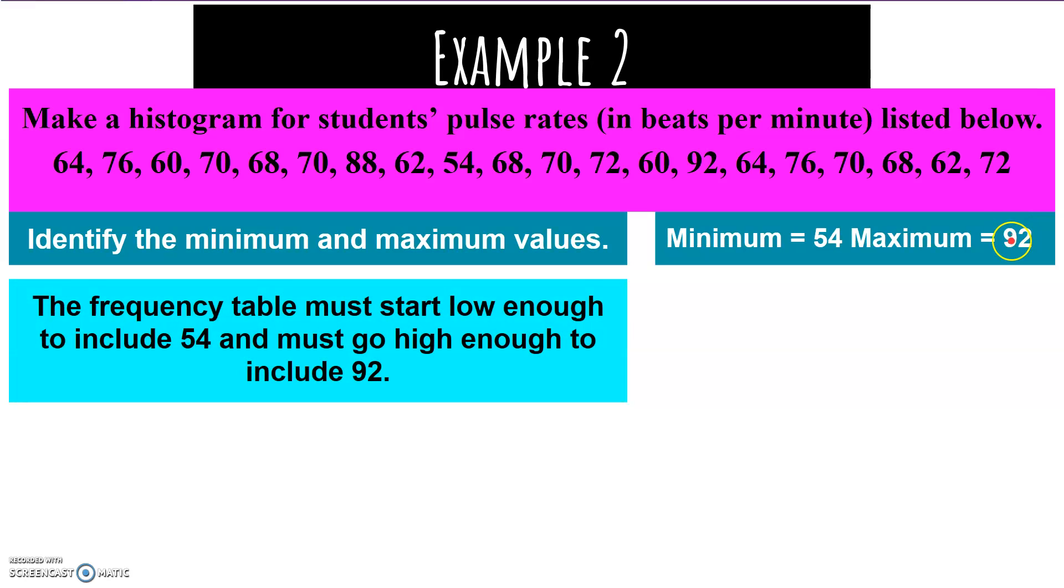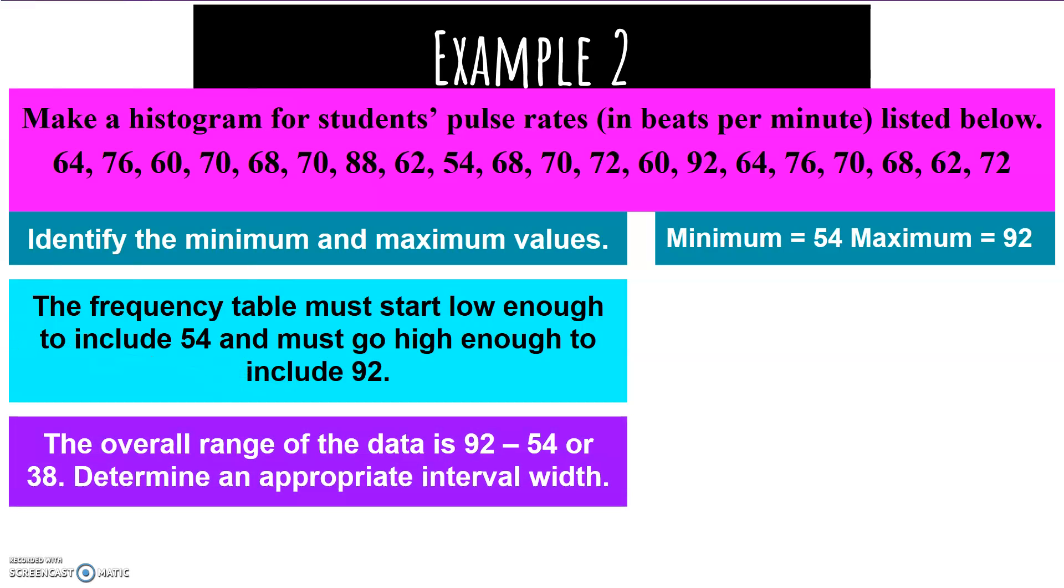The frequency table must start low enough to include 54 but must go high enough to include 92. The range of our data is 38. So that's the distance of our histogram. The horizontal axis needs to go from at least 54 to 92, so it's a distance of about 38. What are we going to break our 38 into chunks of to make it even?